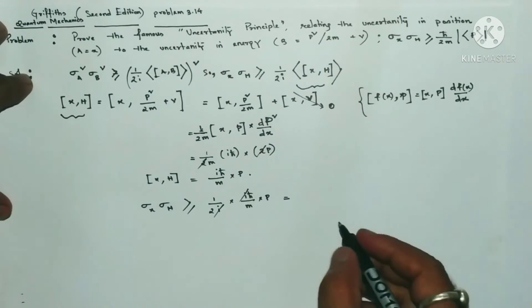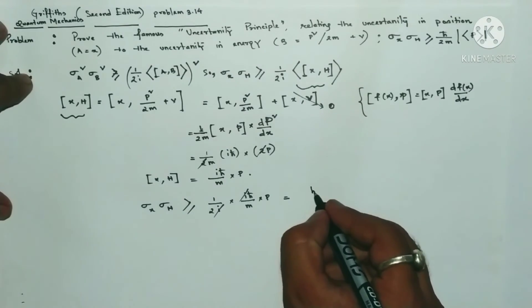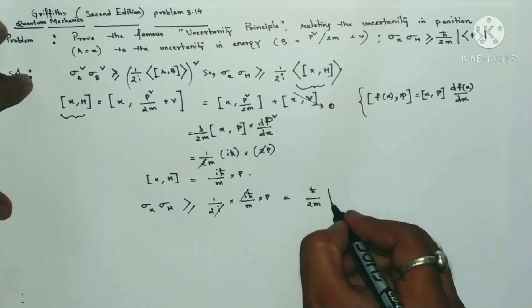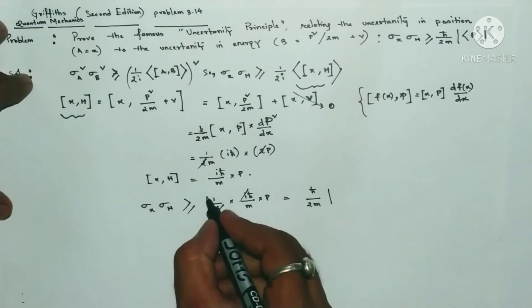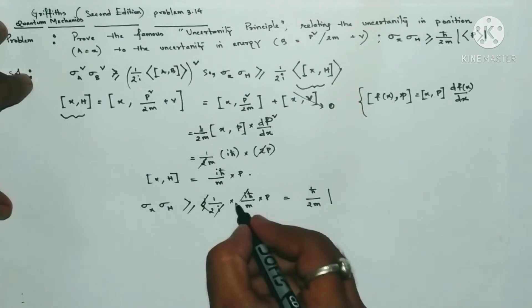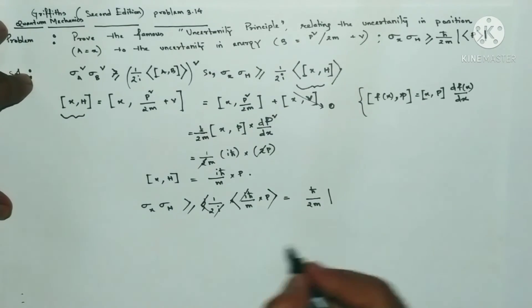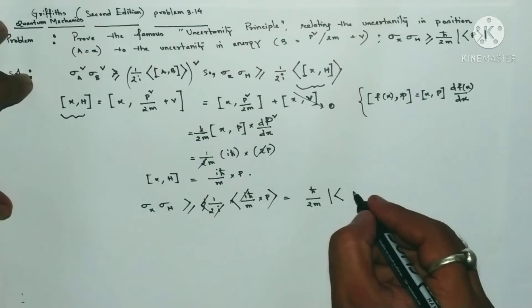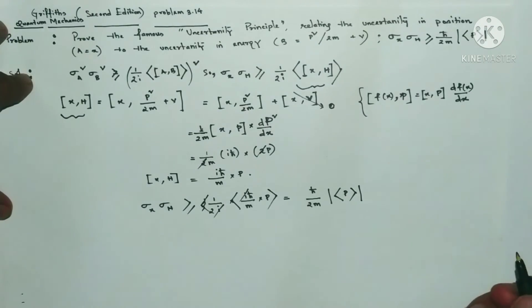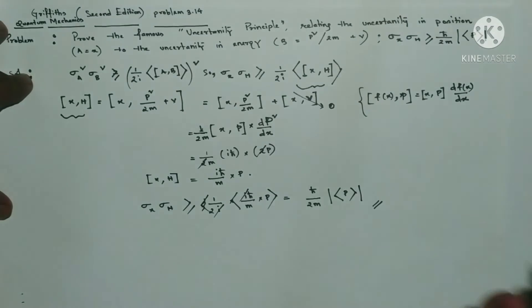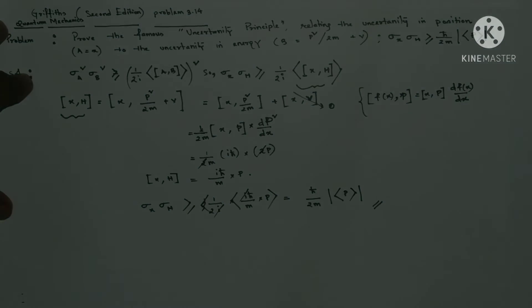The i and i will cancel out, and we will have h-bar by 2m. Since there is an expectation, this will matter as an expectation of P under modulus. Thank you so much.